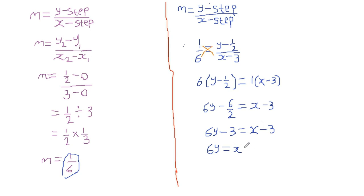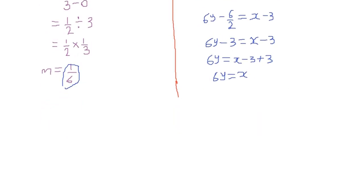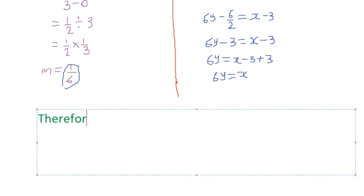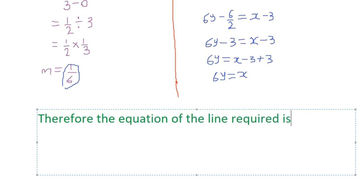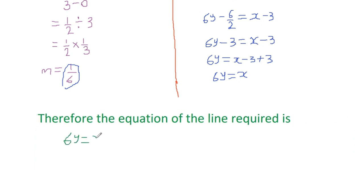Grouping like terms: 6y = x - 3 + 3, so 6y = x. Therefore the equation of the required line is 6y = x. That's how you find such equations.